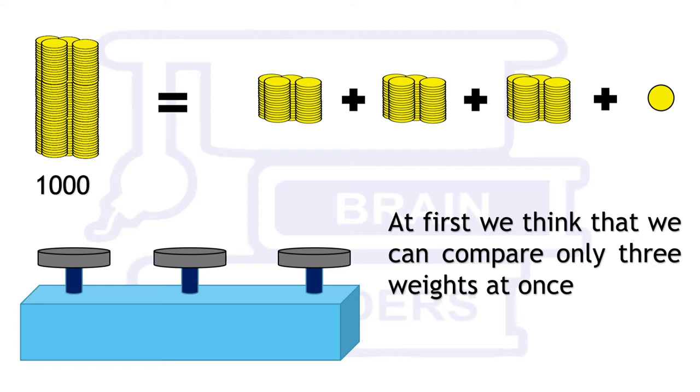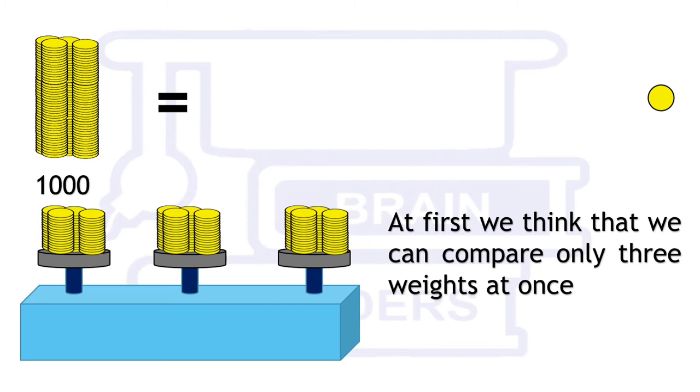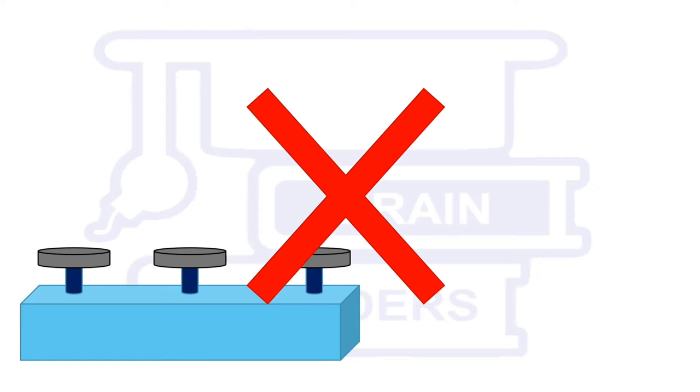We try to divide 1000 coins into three equal groups. Thus each group formed is having 333 coins and one coin is left. Then we compare these groups of coins and this is the mistake that puzzle wants from us.